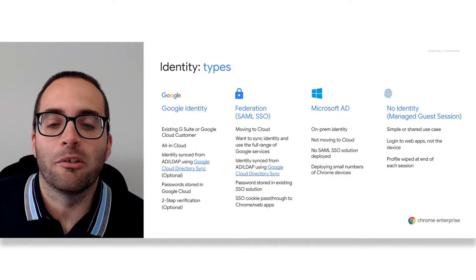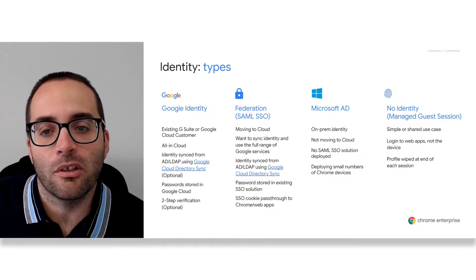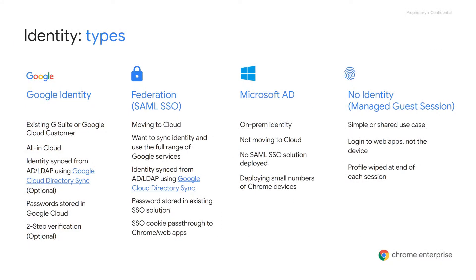Chrome Enterprise provides a number of different options for businesses to authenticate their users onto Chrome OS devices. The first option is using Google Identity. If the customer has already deployed Google Identity either to use G Suite or other Google Cloud services, then these same credentials can be used to log into Chromebooks, and this is an ideal solution for customers who have already moved to the cloud. Often customers will continue to use an existing Active Directory or LDAP service as a source of truth for user details and will sync identities to Google Identity using Google Cloud Directory Sync. When using Google Identity, passwords are stored in the cloud and customers have the option of leveraging Google's two-step verification solution.